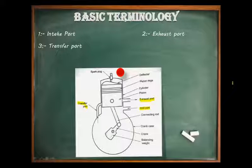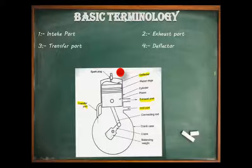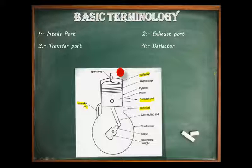Fourth is deflector. A deflector is a well-designed protruding shape situated on the head of the piston in a two-stroke engine. The deflector directs the fresh intake charge into the upper part of the cylinder, pushing the residual exhaust gases down the other side of the deflector and out the exhaust port.